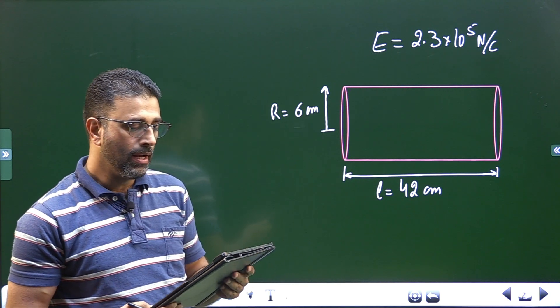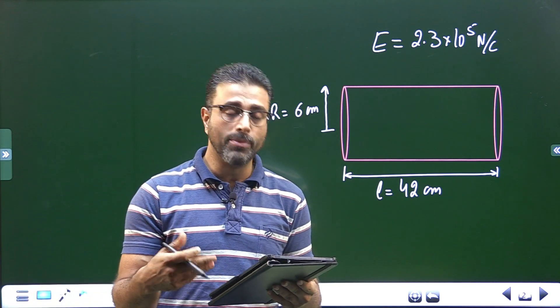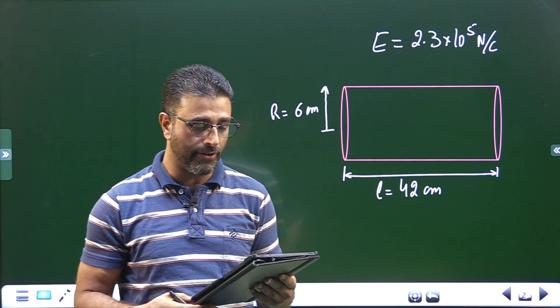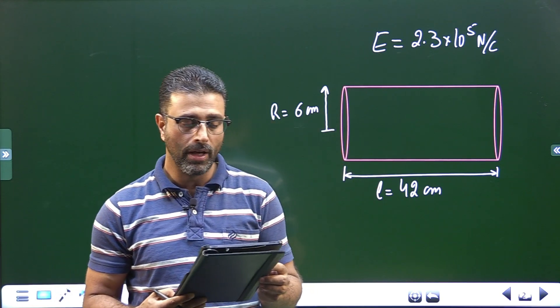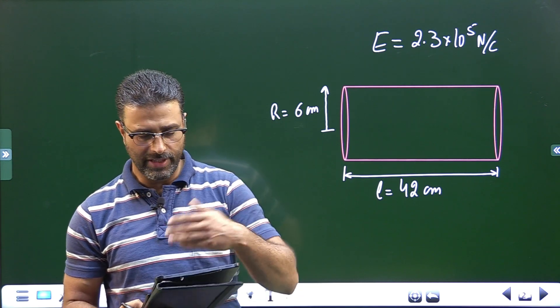The electric field just above the drum surface is 2.3 × 10^5 Newton per Coulomb. What is the total charge on the drum? There is part B we'll go through that in a while. First let's go for part A.